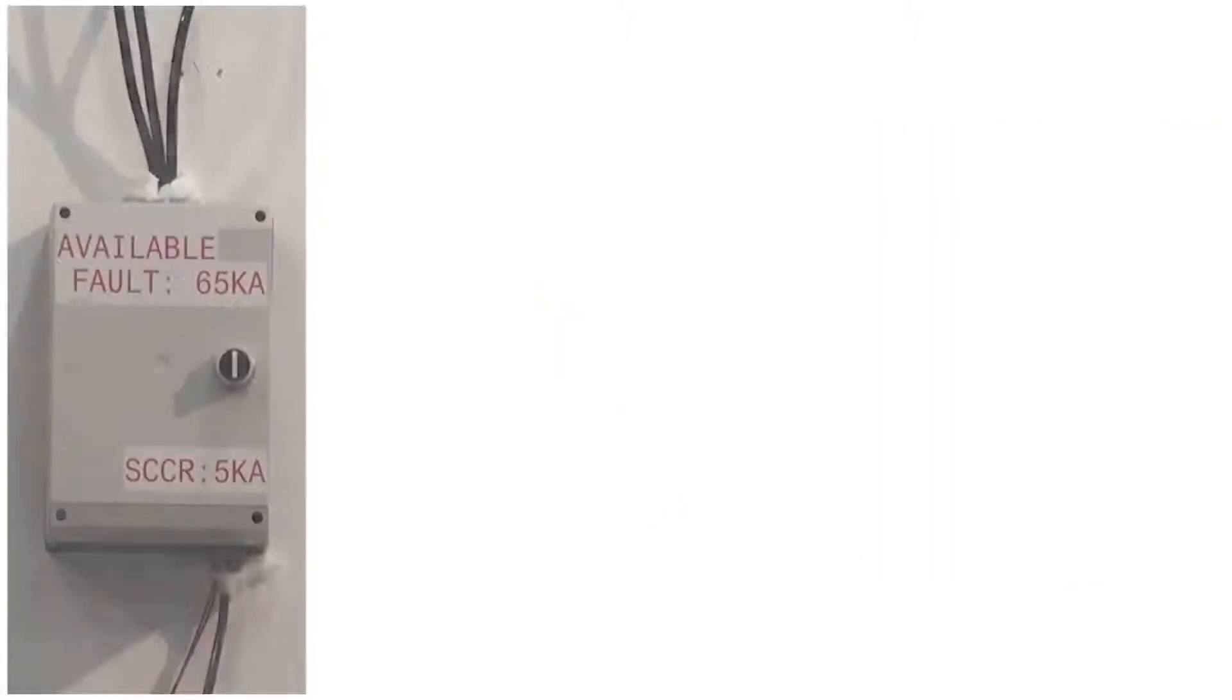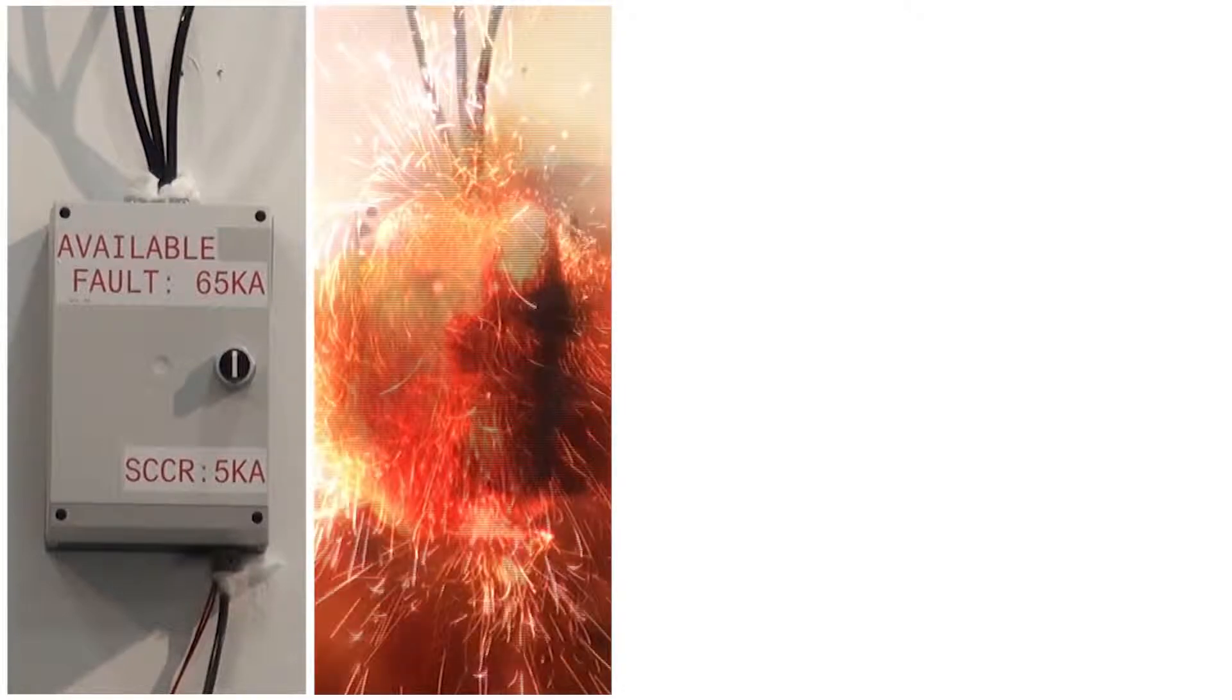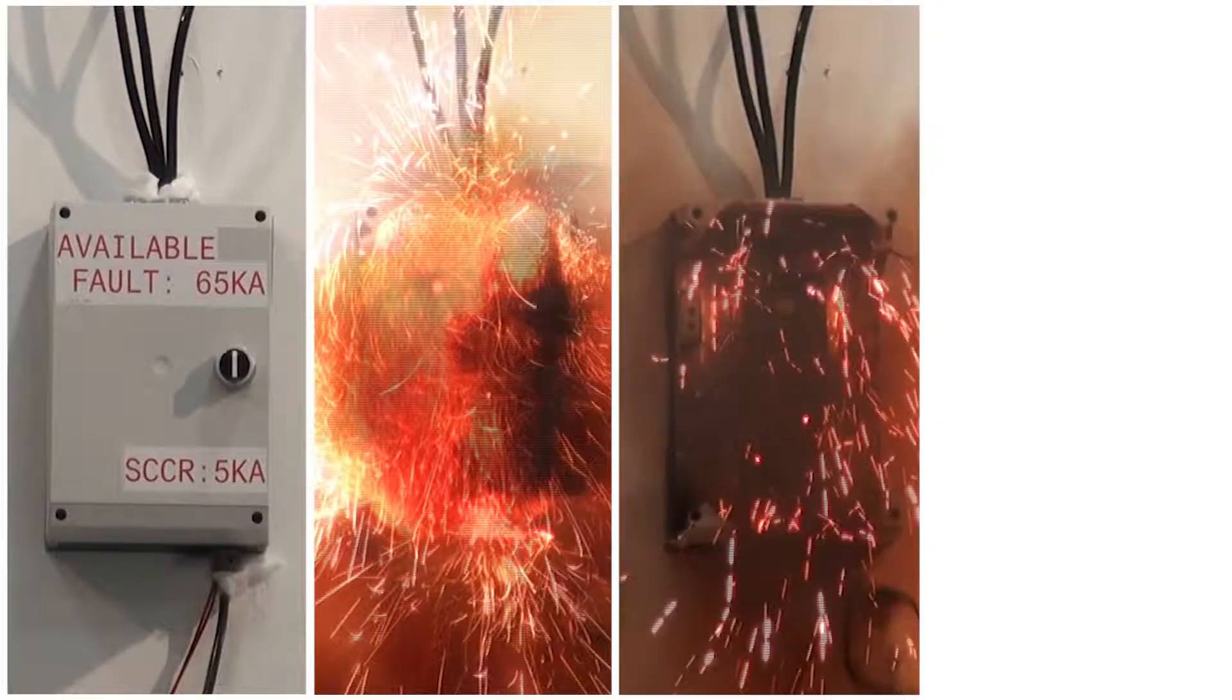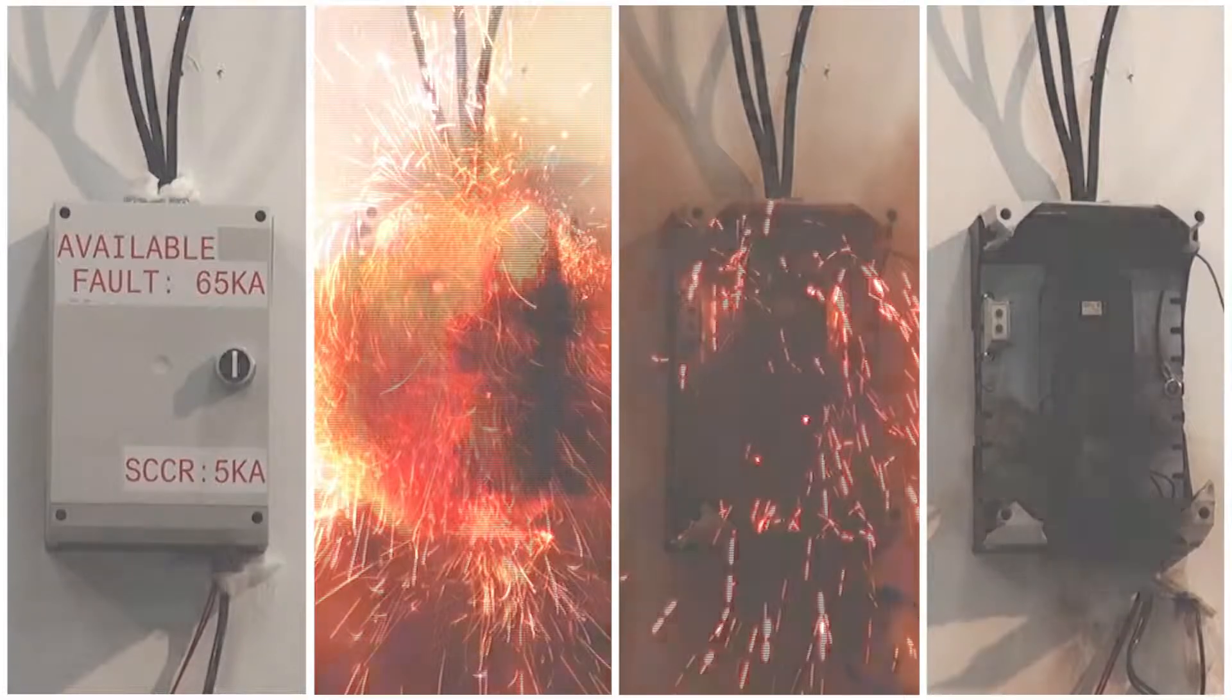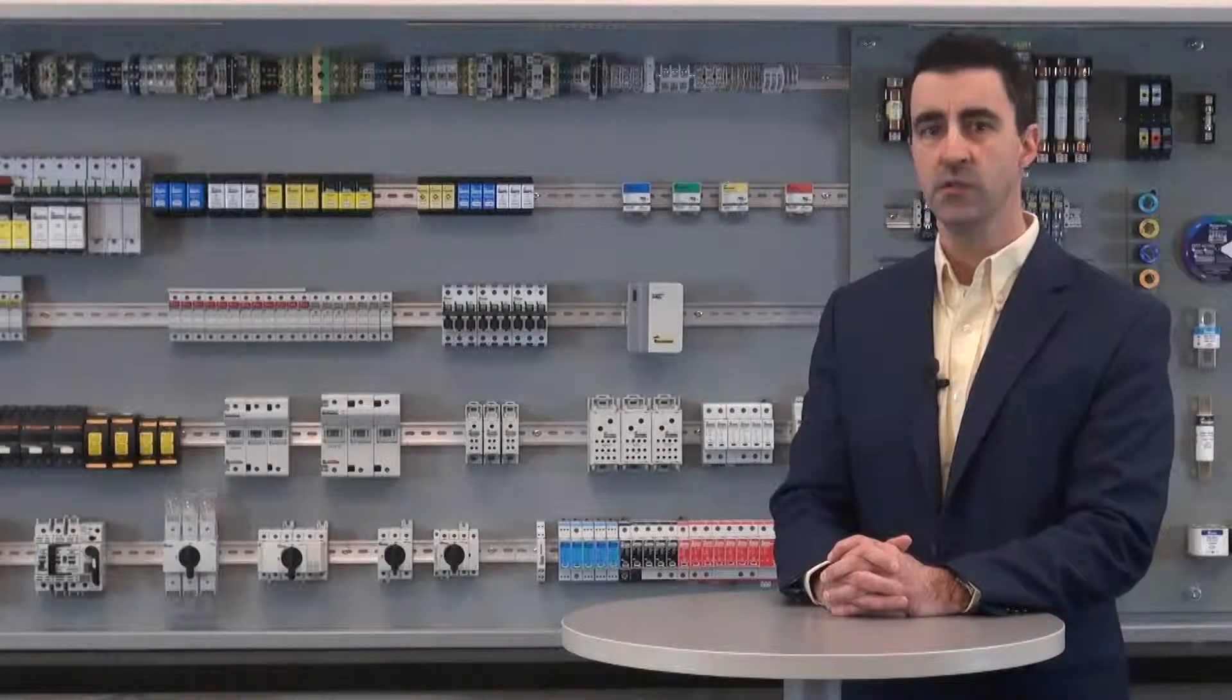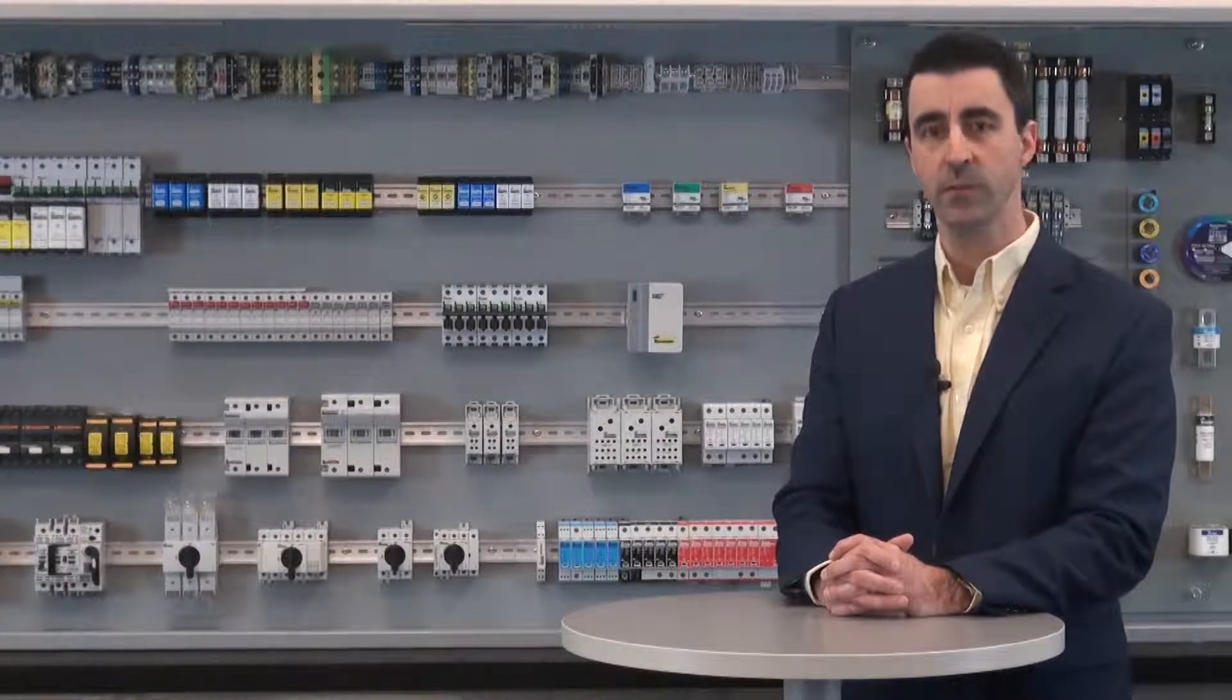At the same time, huge magnetic forces developed between conductors can crack insulators and destroy bracing structures, with the maximum mechanical force exerted being proportional to the square of the instantaneous peak current. It is extremely important that overcurrent protective devices limit fault currents before they reach their full potential.